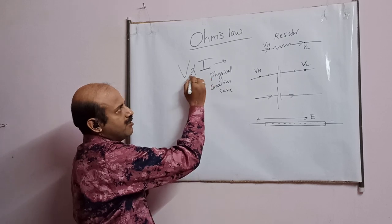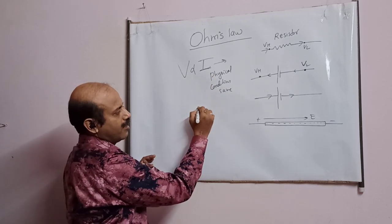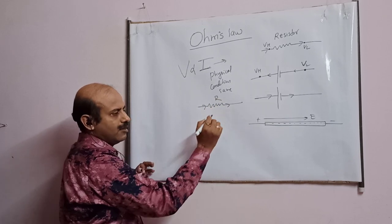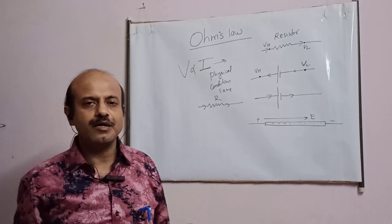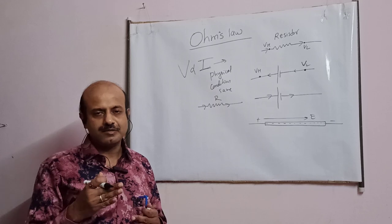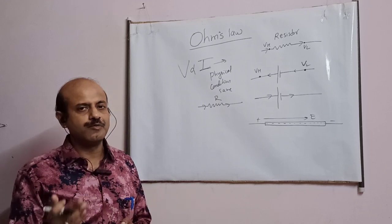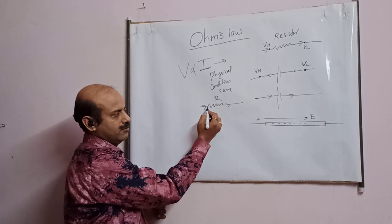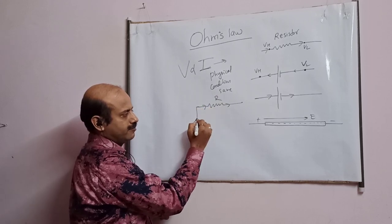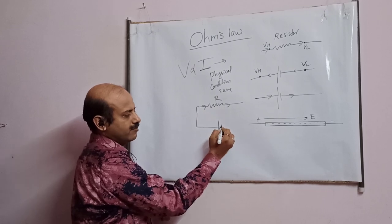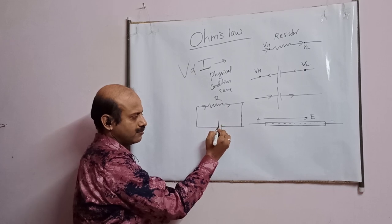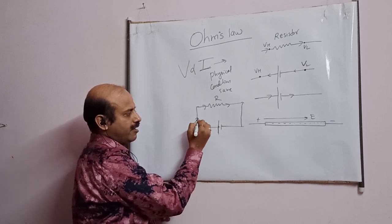This proportionality sign is there. Say there is a conductor — the conductor symbol is this instrument. Because every substance opposes the current; though a conductor opposes less and an insulator opposes higher, when current is passed some opposition is there. That opposition is shown by this symbol, written as R. Here I have connected a battery, and this is the direction of current.